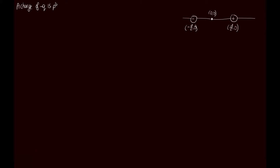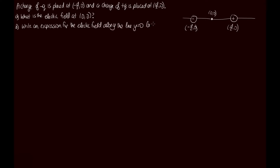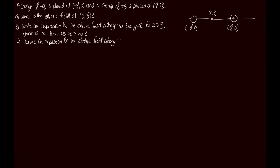The question: a charge of minus q is placed at (−d/2, 0) and the charge of plus q is placed at (d/2, 0). Part a: what is the electric field at (0, 0)? Part b: write an expression for the electric field along the line y = 0 for x > d/2, and what is the limit as x goes to infinity? Part c: derive an expression for the electric field along the line x = 0 for y > 0.